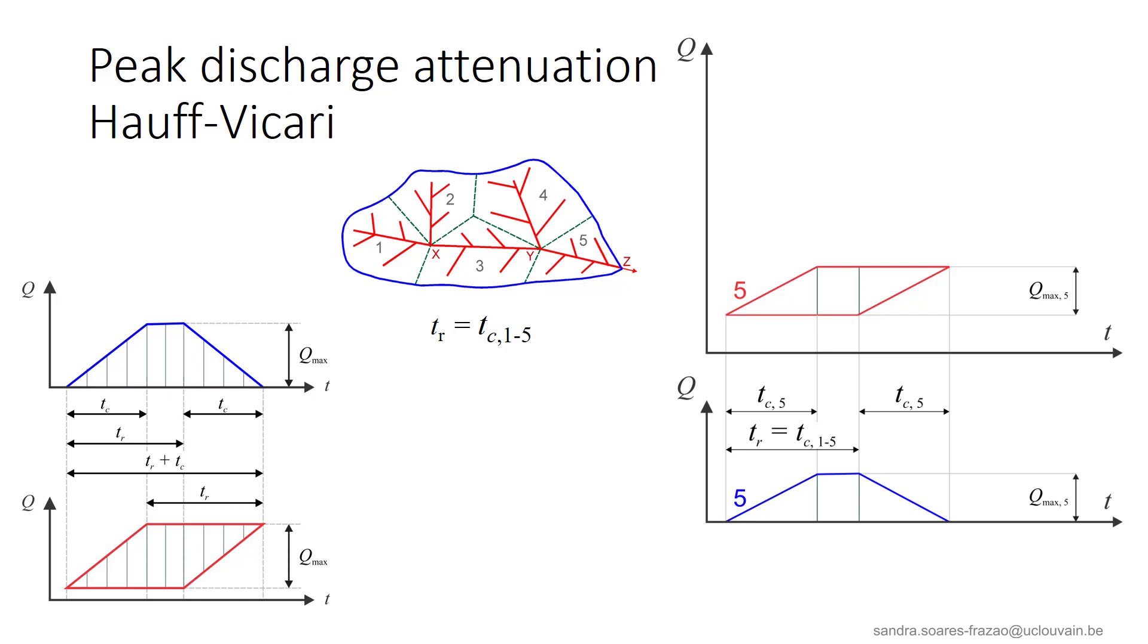Let's apply this to the illustrated catchment. We consider a rainfall with a duration equal to the global time of concentration, so Tr equals Tc15. The effect on subcatchment 5 is represented here, with the transformation from the trapezoidal shape to a parallelogram. The local time of concentration is Tc5, that is of course shorter than the global time of concentration.